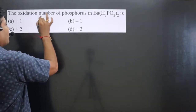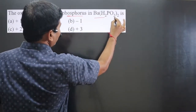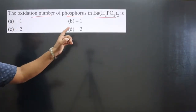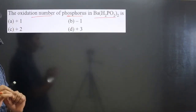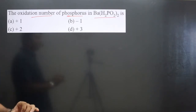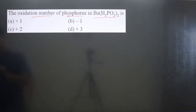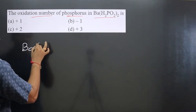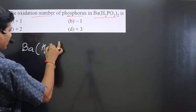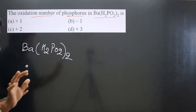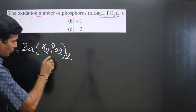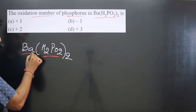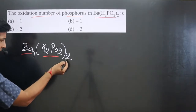The question asks us to calculate the oxidation number of phosphorus in a given compound. There are two methods by which we can easily calculate it. The compound we have is barium with (H₂PO₂)₂ — pay attention carefully. This portion (H₂PO₂) is given two times, and there is only one barium atom.